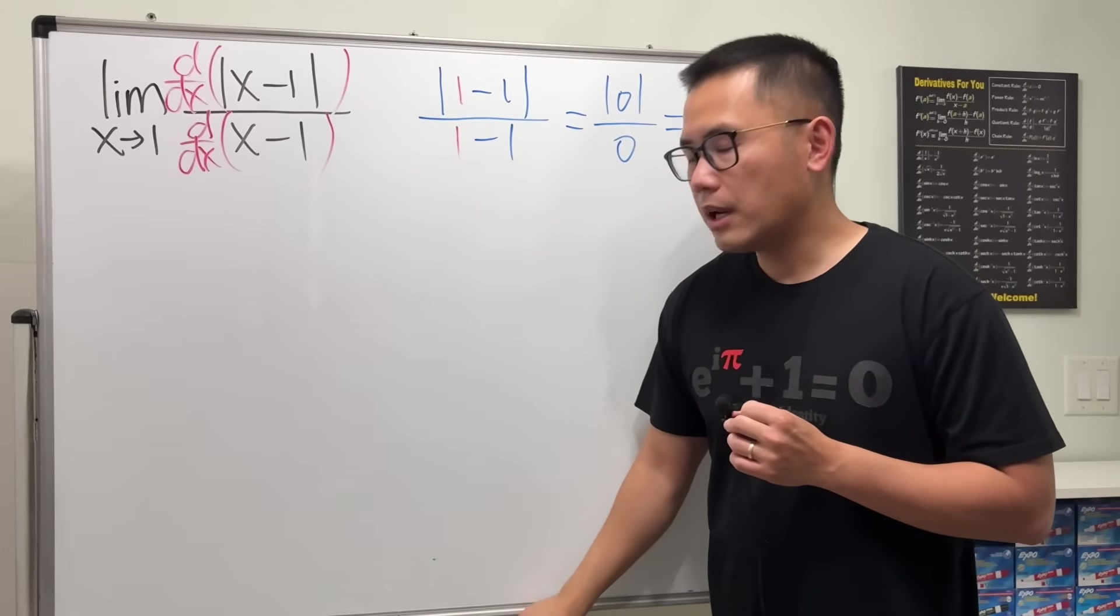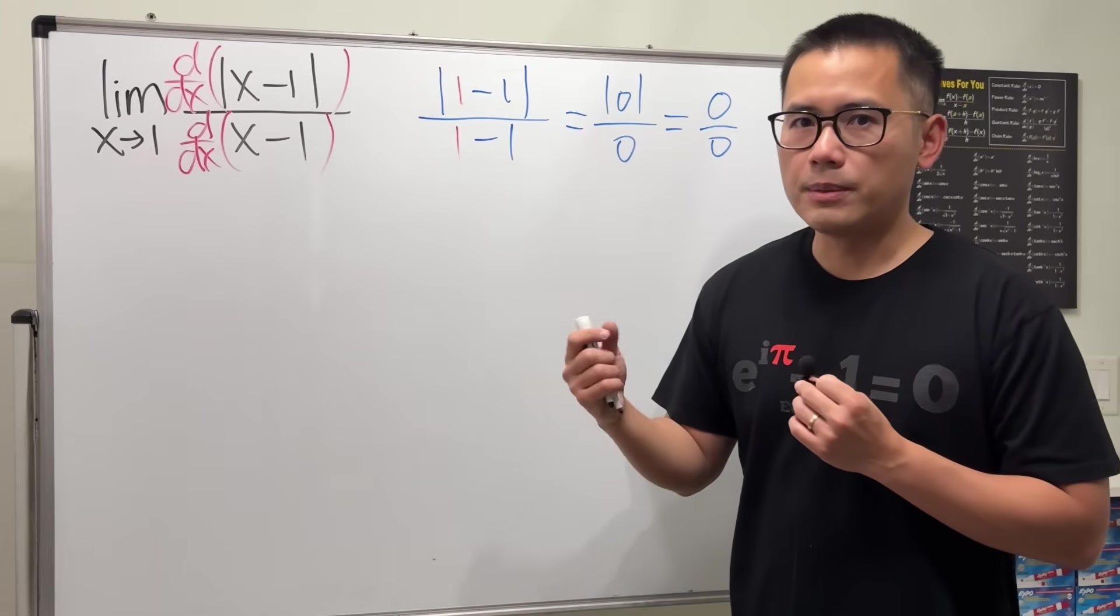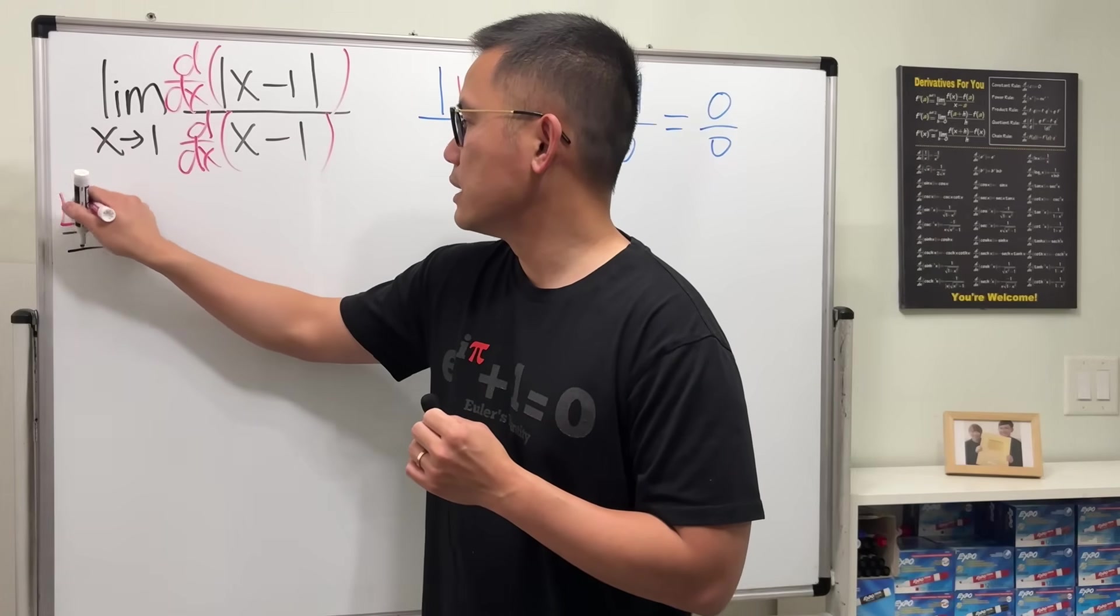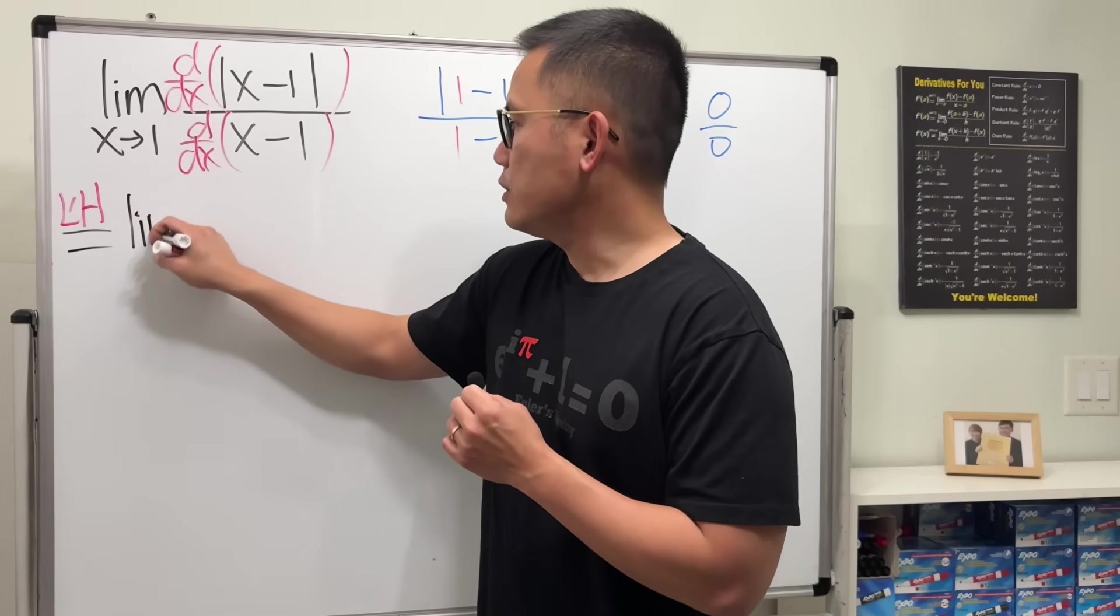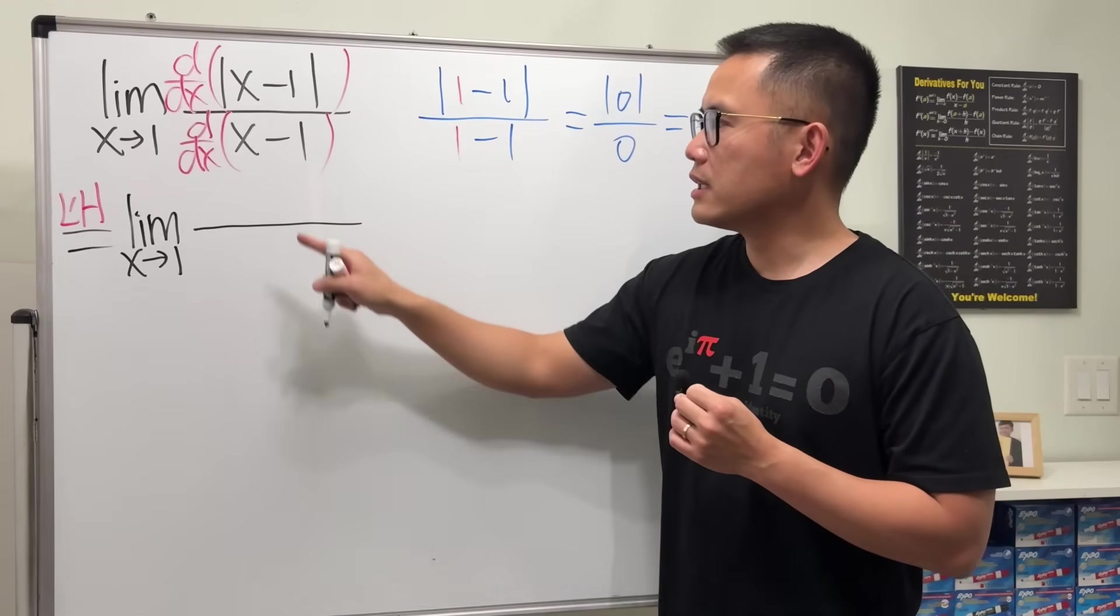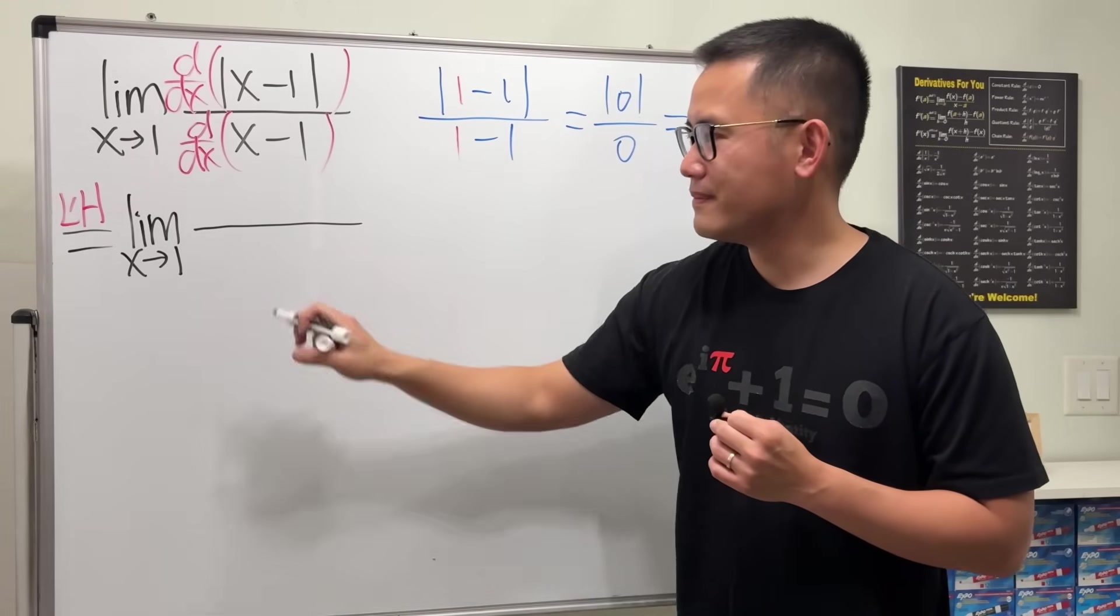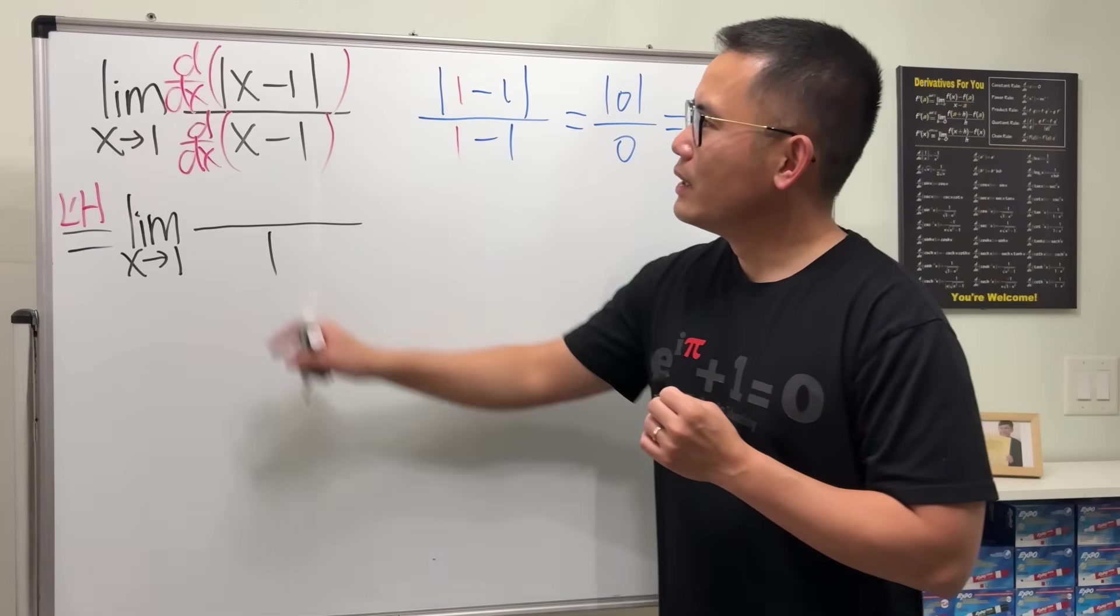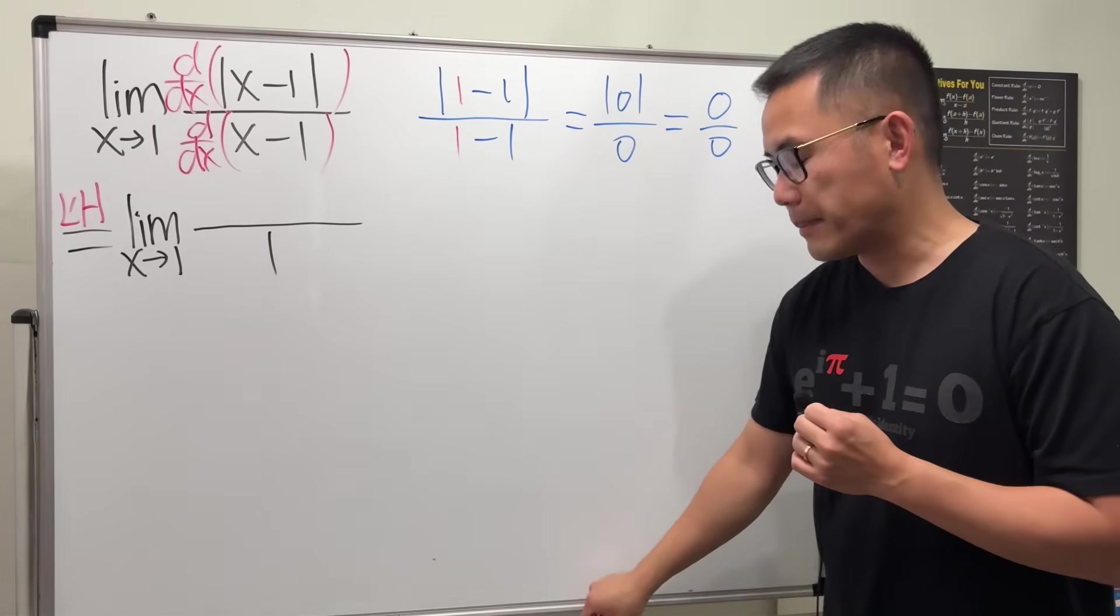And to get an intuition of why L'Hôpital's rule works, you can check out my other video for it. Link will be in the description for your convenience. So this becomes the limit as x is approaching 1. On the bottom, the derivative of x minus 1 is just 1. But on the top, how do we take the derivative of an absolute value?